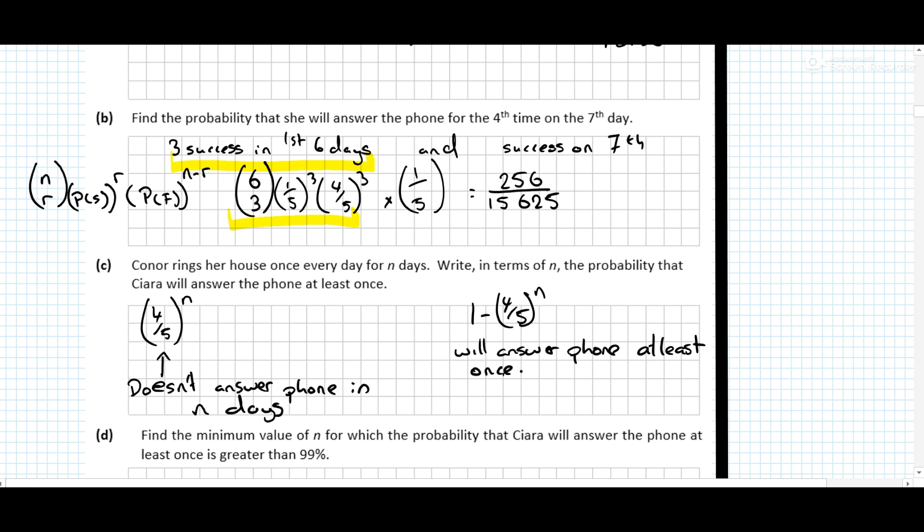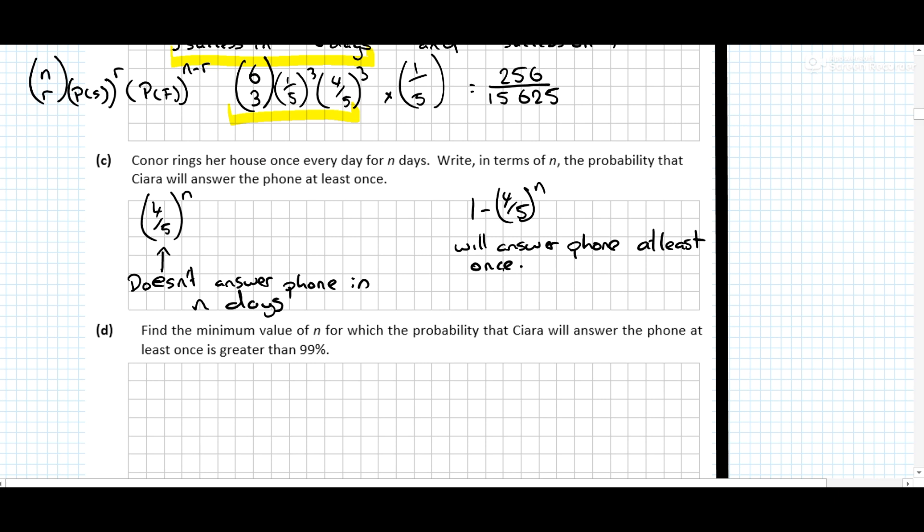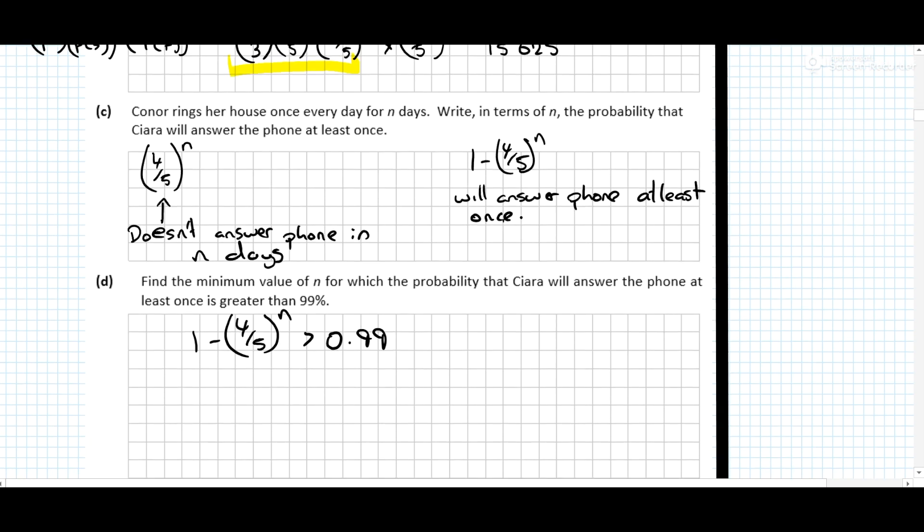Find the minimum value of n for which the probability that she will answer the phone at least once is greater than 99%. So what value of n is this? Because it says the probability she will answer the phone at least once, so when is this greater than 99%? So when is 1 minus 4 over 5 to the power of n greater than 0.99?